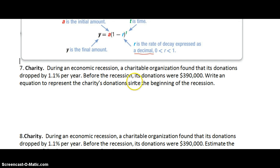During an economic recession, a charitable organization found that its donations dropped by 1.1% per year. Before the recession, its donations were $390,000. Write an equation to represent the charity's donation since the beginning of the recession. So our initial amount, what's our initial amount? $390,000. So A equals $390,000. What else do we need? We need our rate. Our rate is 1.1%. So we put that over 100 to give us our decimal. 0.011.